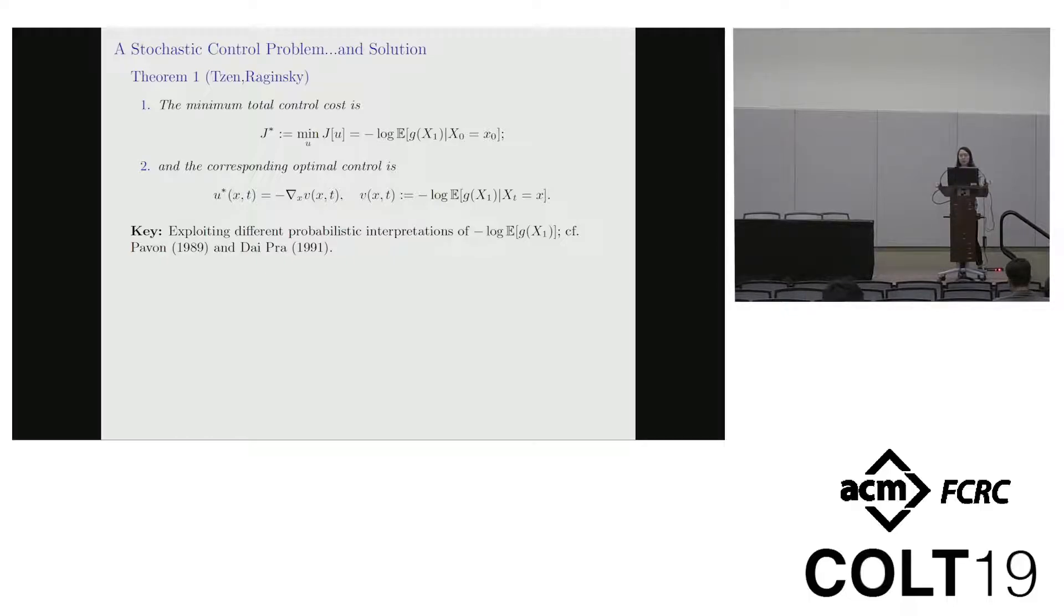The proof relies on a Cole-Hopf transform that gives the solution of a PDE that turns out to be the Bellman equation and the result follows by verification. For some intuition, you can think of the optimal control as doing for all times steepest descent on the value function without wasting any effort in weird other directions.